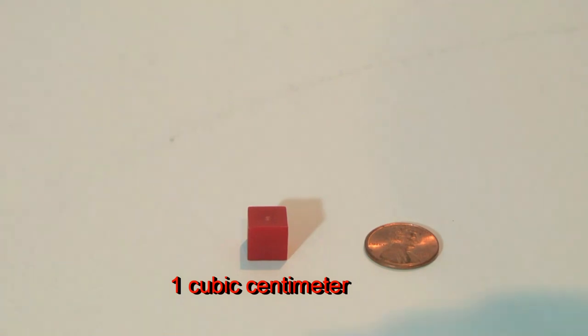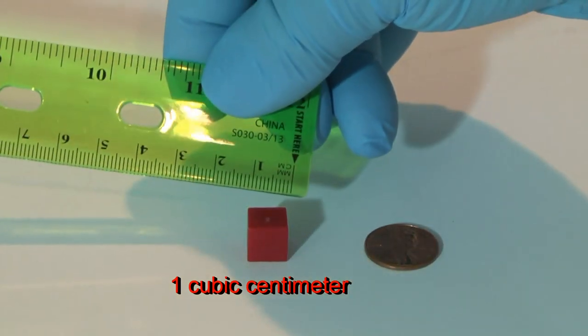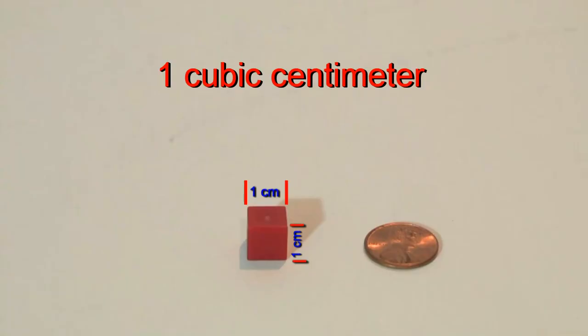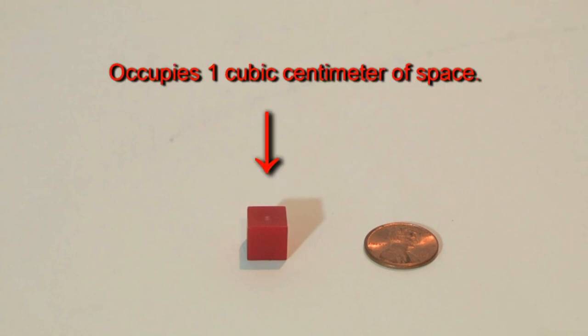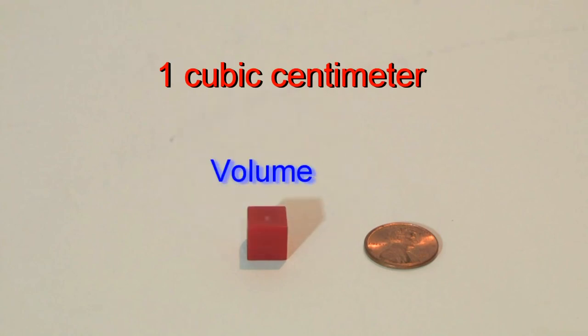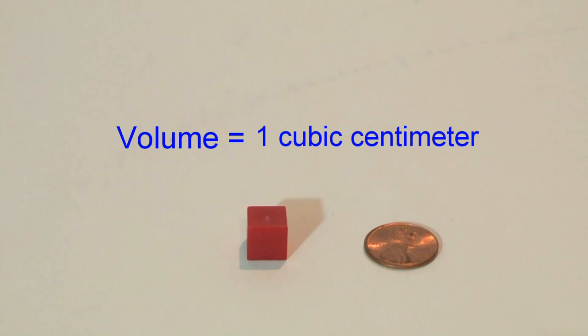This small red cube is called a cubic centimeter. That means that all of the edges of this cube are one centimeter long. It also means that the red cube takes up or occupies one cubic centimeter of space. And when we're talking about space, we're talking about volume. So the volume of this red cube is equal to one cubic centimeter of space.